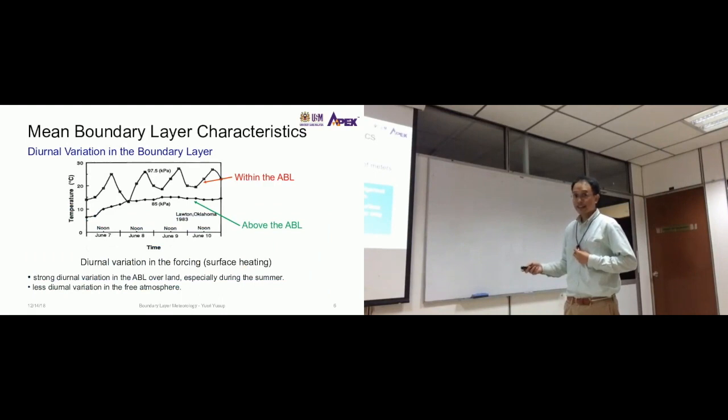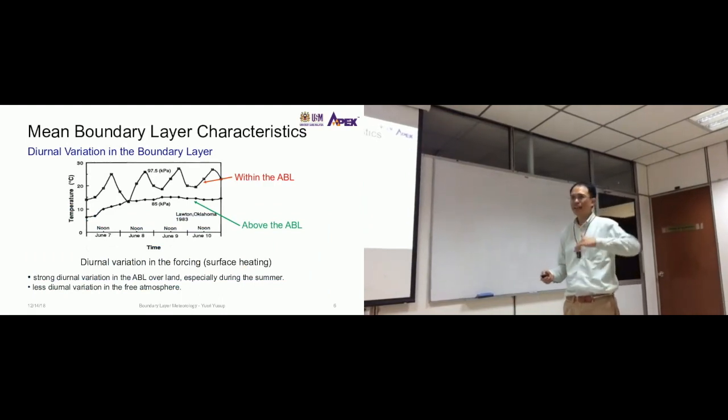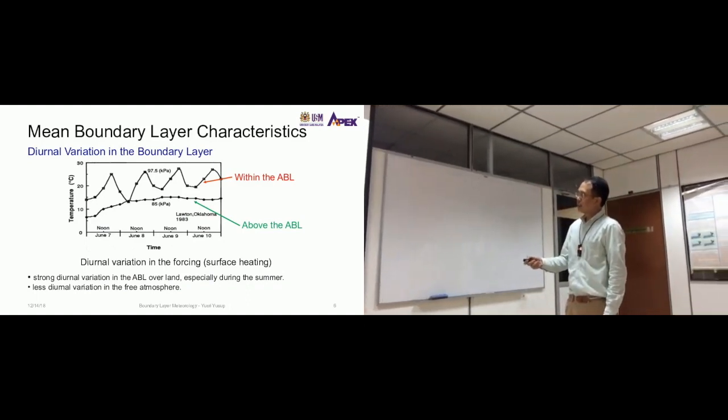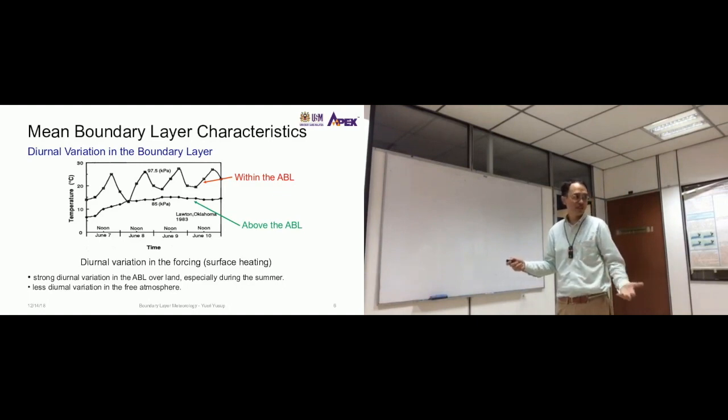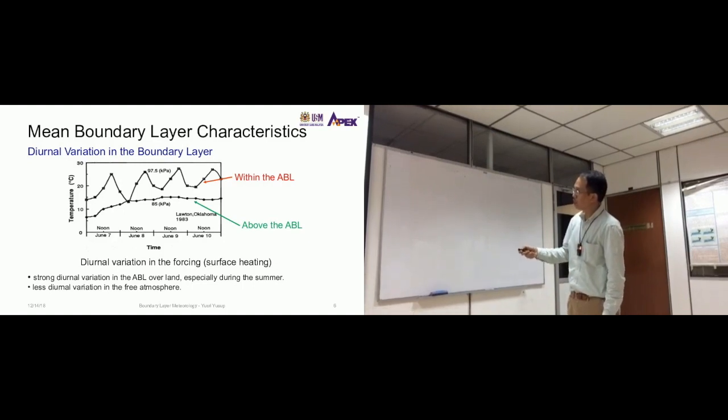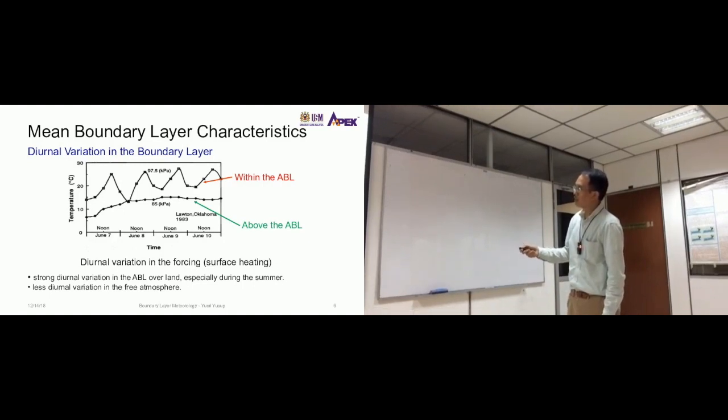So let's look at the variation of the boundary layer. How does it actually change with time of day? Diurnal variation means daily changes, so daily variation from morning to night. This is within the ABL, and this is above the ABL. For this line here, it's within the ABL, and for this line here, it's above the ABL.